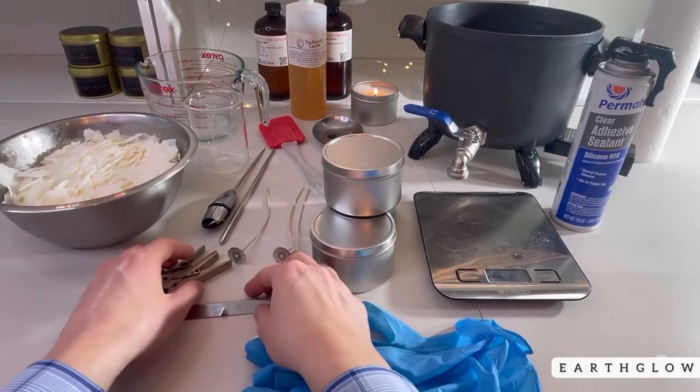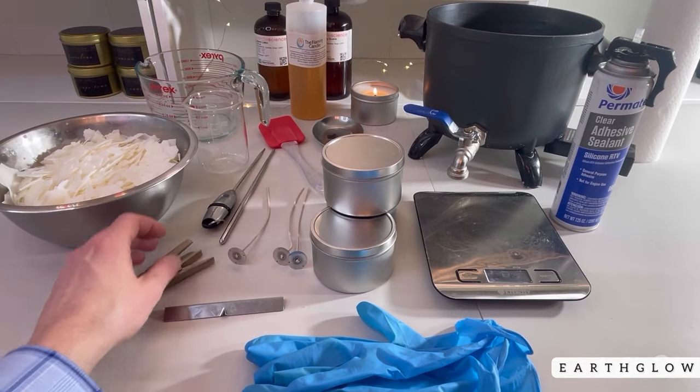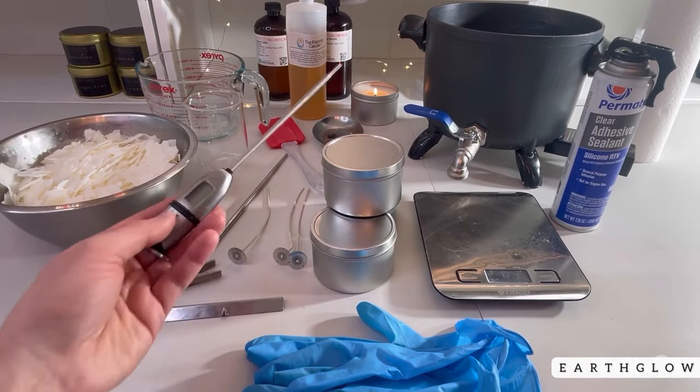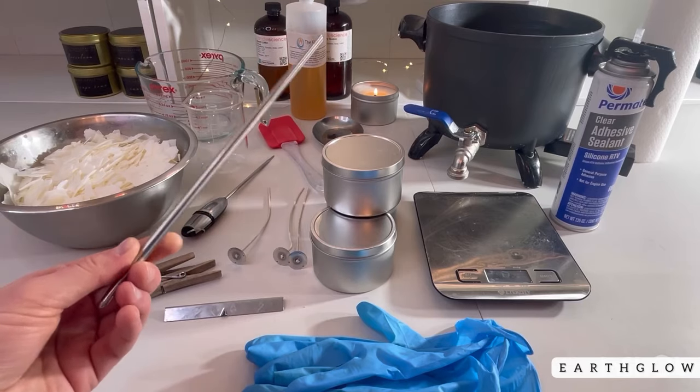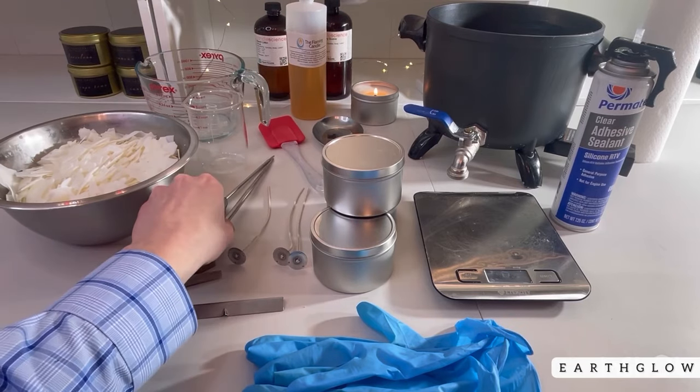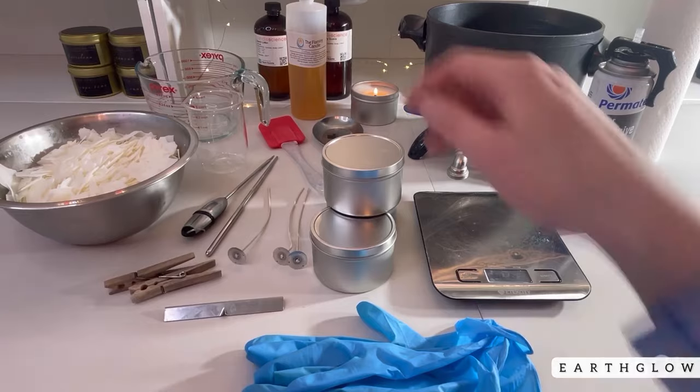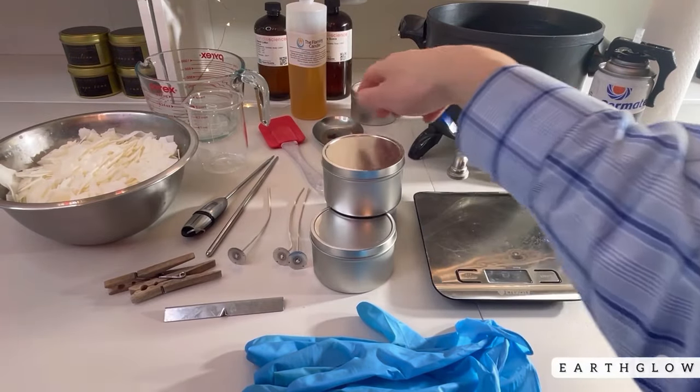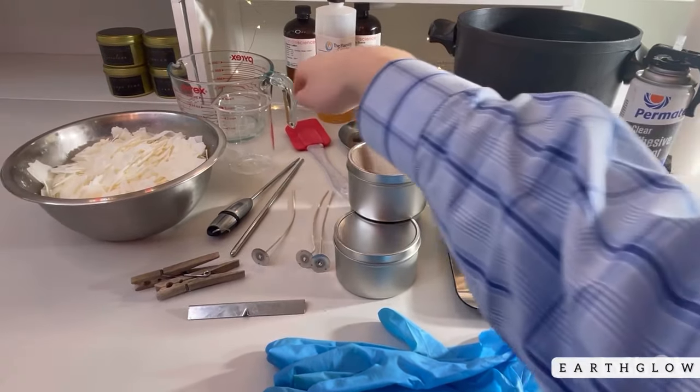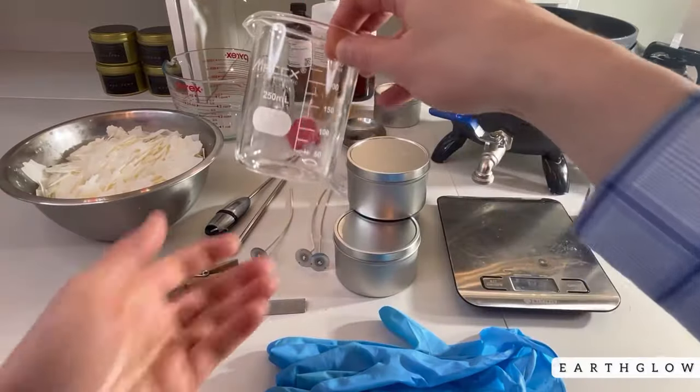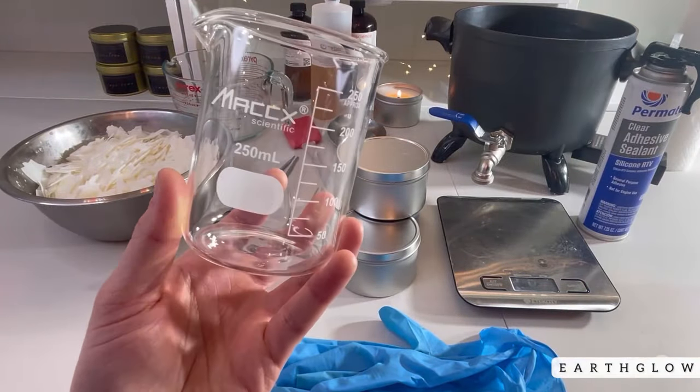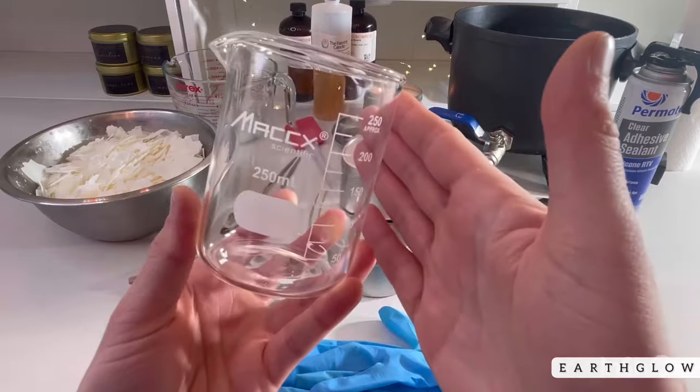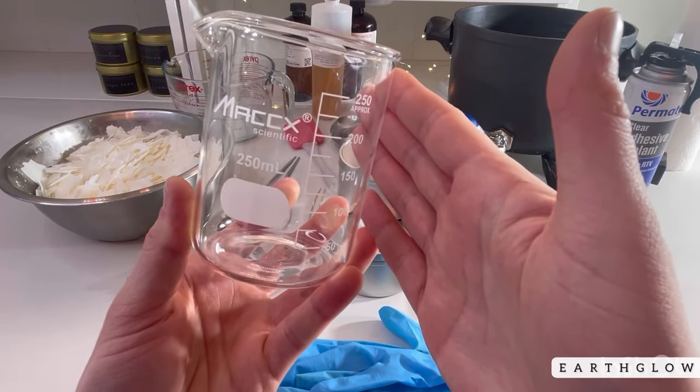The wick bars. You can also use clothespins. You'll need a stick thermometer, a chopstick so that your fragrance oil doesn't spill all over when you pour it into your measuring container, a spatula that you don't use for cooking. Something to measure out your fragrance in and I would recommend just investing in a little beaker for this and I'll have one linked down below.